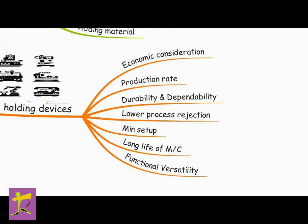The following considerations are to be made while selecting a machine: economic considerations and due analysis should be made; production rate and unit cost of production; durability and dependability; lower process rejection; minimum setup and put-away times; longer productive life of machines or equipment; and functional versatility, i.e., ability to perform more than one function.